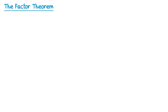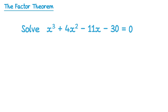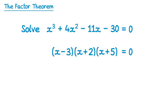You could also be asked to solve cubic equations. If we're asked to solve this cubic equation — the same as the last one but set equal to 0 — we factorise it as we just did, then find our solutions. From the x minus 3 bracket we get x equals 3. The x plus 2 bracket gives x equals negative 2, and the x plus 5 bracket gives x equals negative 5.